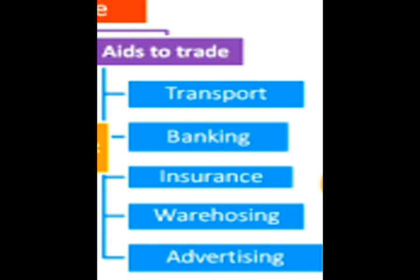Next is warehousing. Goods are always produced in anticipation of demand — that is, the producer forecasts demand beforehand and then produces the goods, so that as soon as the demand arises, goods can be supplied to the consumer. Because if he is not ready with the goods, his competitor will supply the goods and his customers will switch to competitors. But if he is producing goods in anticipation of demand, before the demand arises, he will keep those goods in warehouses.